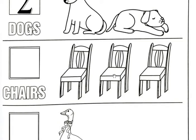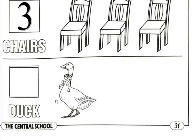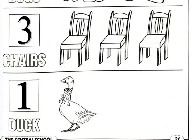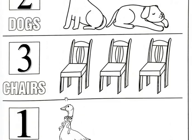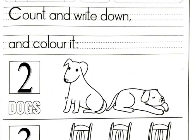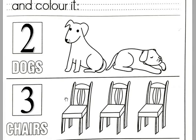Next one — chairs. How many chairs? 1, 2, 3 — 3 chairs. So you have to write number 3 in the box. Next one — duck. How many ducks? 1 duck. So you have to write number 1 in the box. You have to color the dogs, chair, and duck on page number 31. That's how you do pages 30 and 31 in your math workbook. Thank you.